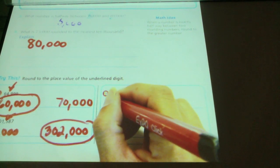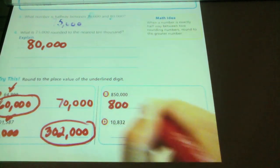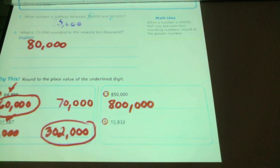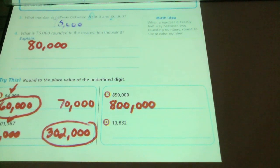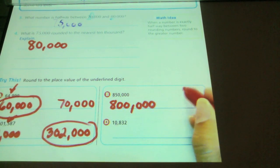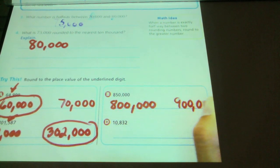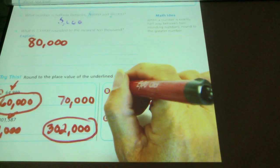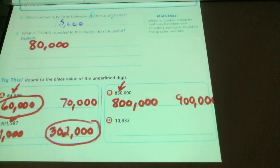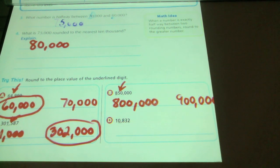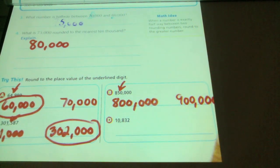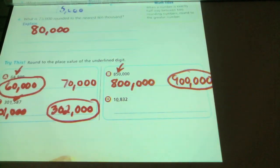850,000. On my low end, I'm going to have 800,000. On the high end, I'm going to have 900,000. I'm going to look at the digit next to the 8. And it's a 5. 5 tells us it's the halfway point. It's the halfway point. And once we hit the halfway, we round up.